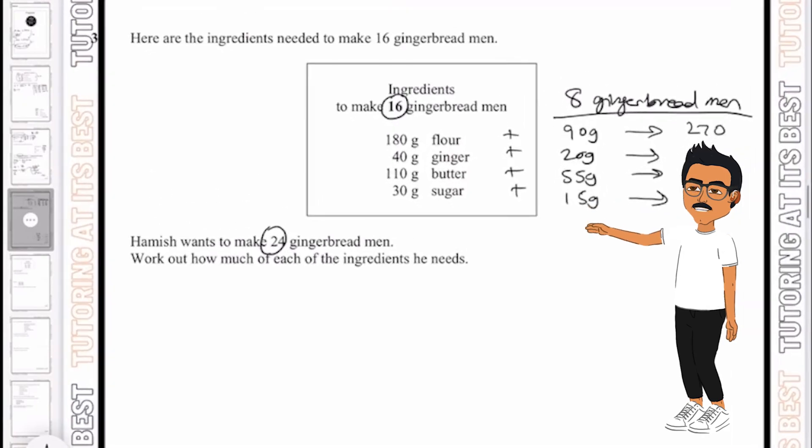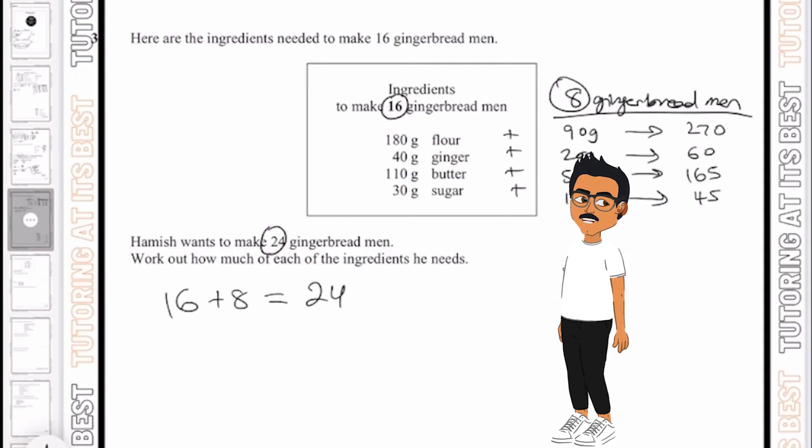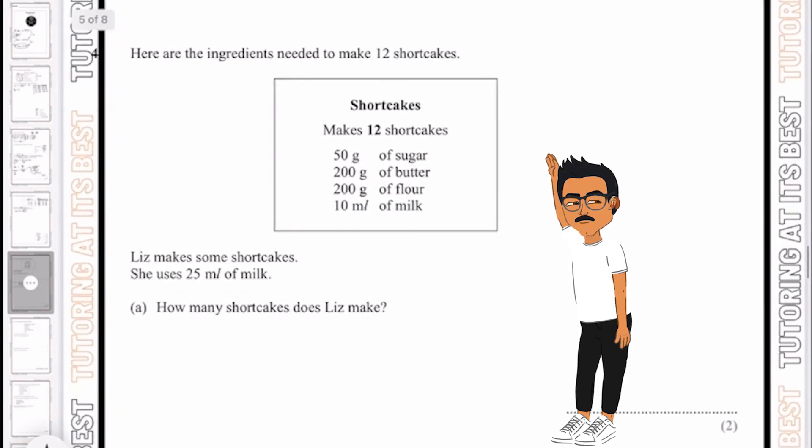So I hope you can see how I've got half of 16, which is 8, and then I've added 16 and 8, which gives me 24, which is exactly what Hamish wanted. Okay. Question four.